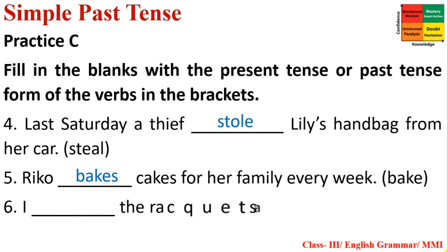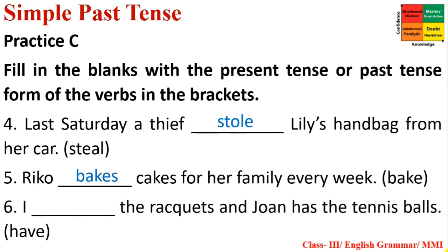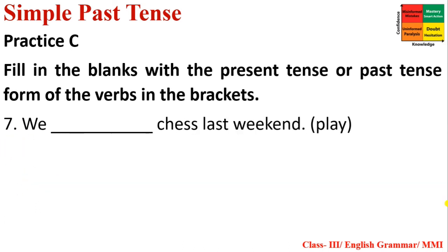Number six: 'I have the rackets and John has the tennis ball.' Before and after 'and,' verb forms must match. 'Has' is present form, so before 'and' use 'have.' Correct: 'I have the rackets and John has the tennis ball.' Number seven: 'We played chess last weekend.' 'Last' signals Simple Past Tense, so past form of 'play' is 'played.'